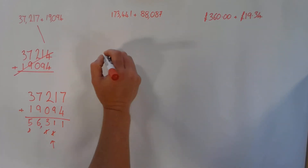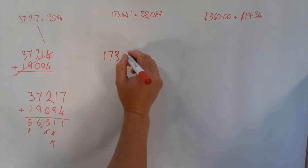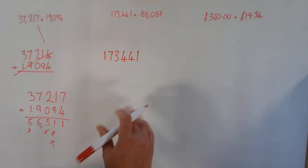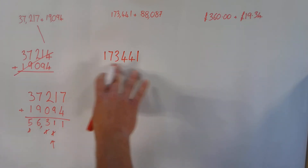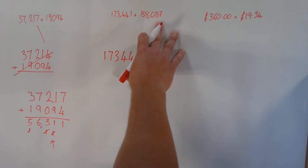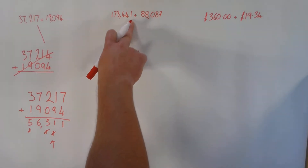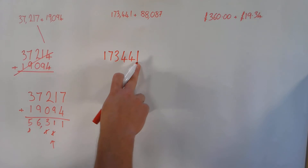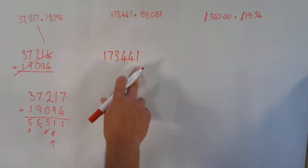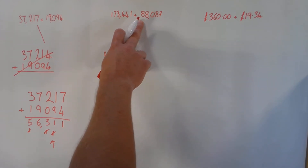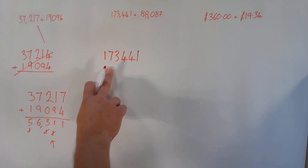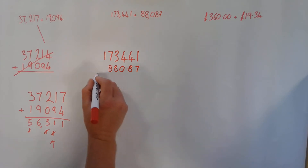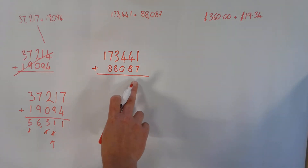Moving on to the next calculation, how I lay this out is really important. I'm going to start with the largest number at the top — you don't always get given the largest number first, but I would always suggest putting it on top as it makes more sense when adding a smaller number to a larger one. I have six digits in my first number and only five digits in my second, so I need to be very careful about placement. Since I have one one here and seven ones in the other number, those two have to line up underneath each other.